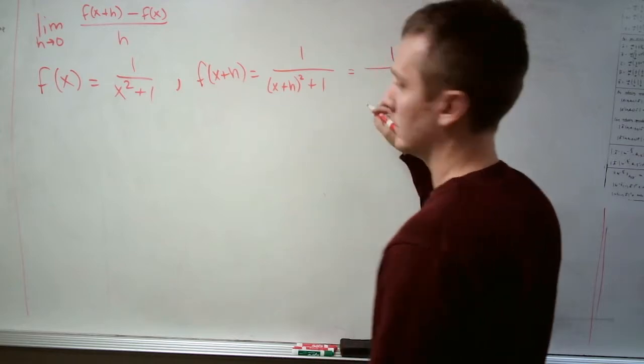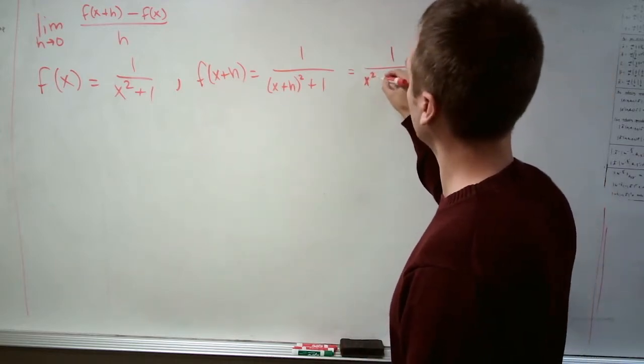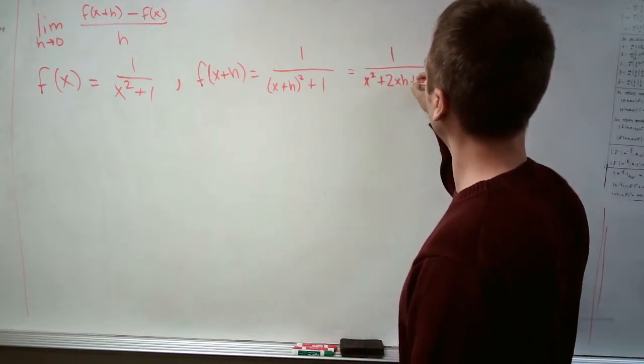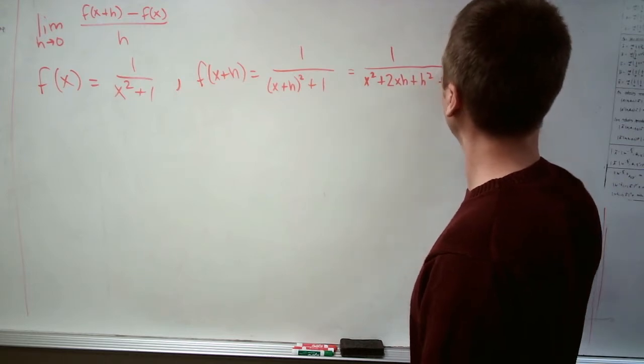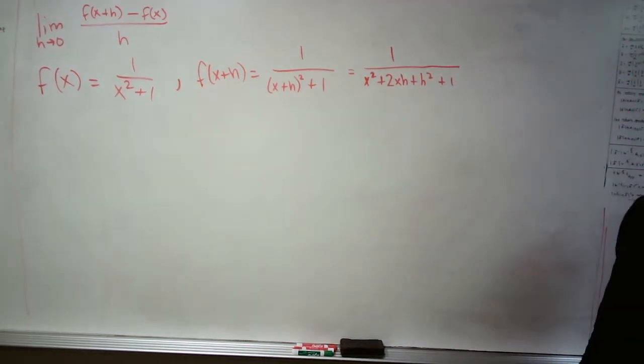We'll FOIL that out. This is x squared plus 2xh plus h squared plus 1, all dividing 1 still.